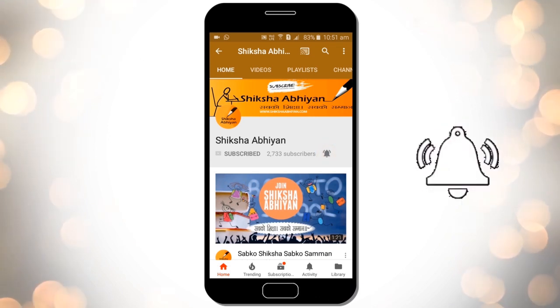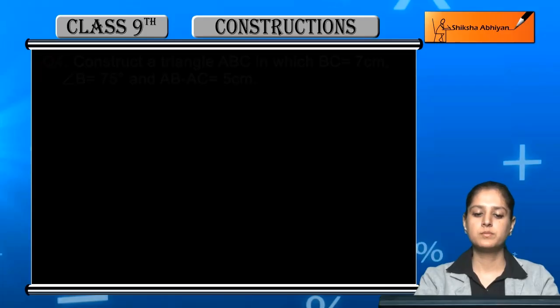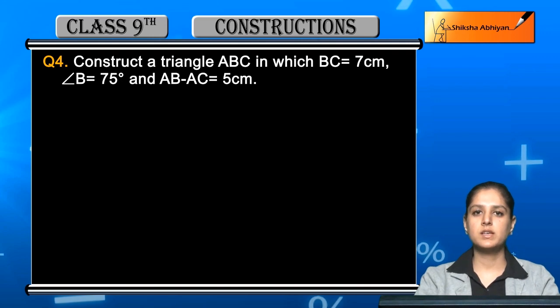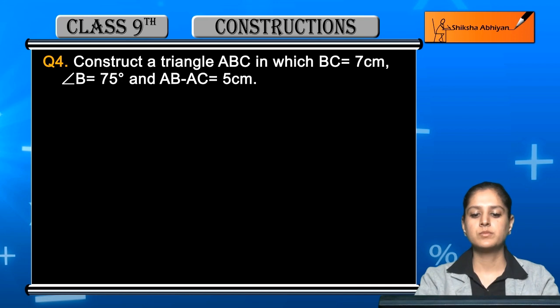Question number four: Construct a triangle ABC in which BC is equal to 7 centimeter, angle B is equal to 75 degree, and AB minus AC is equal to 5 centimeter.